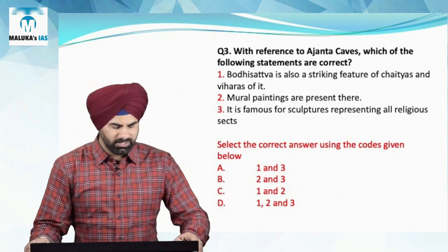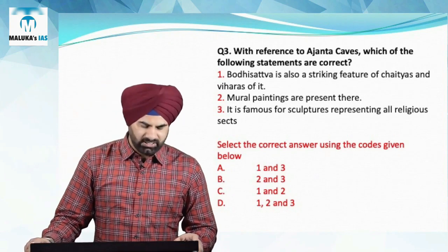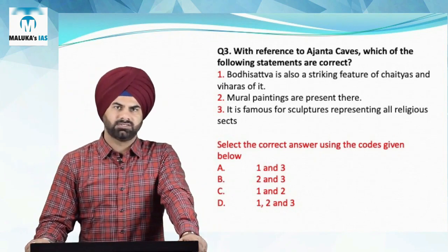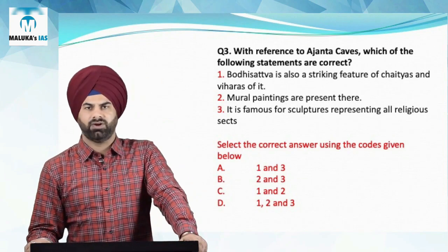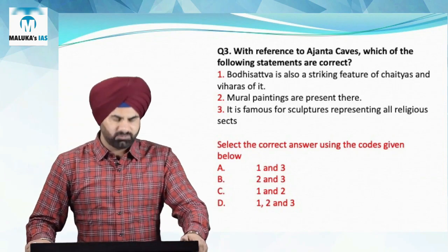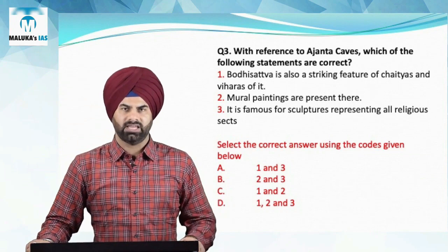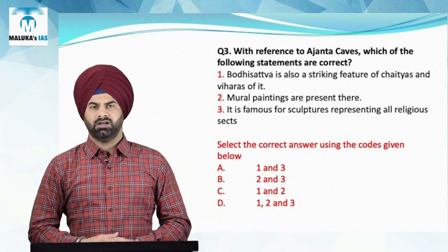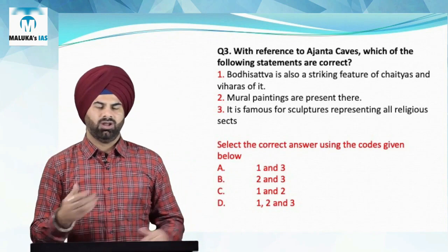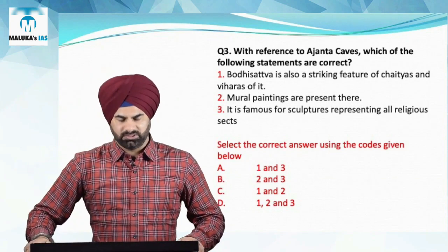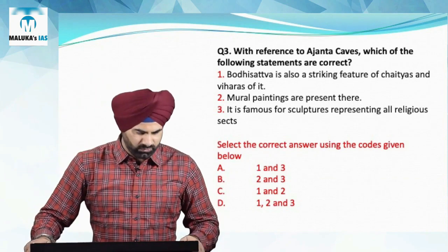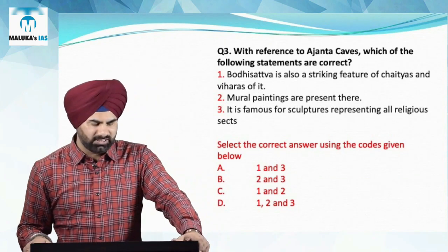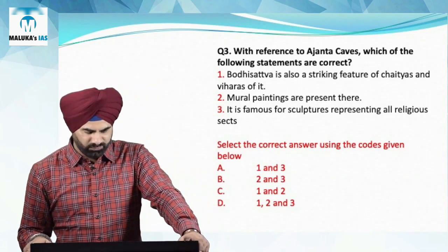The third statement — that Ajanta is famous for sculpture representing all religious sects — is wrong. All religious sects such as Ajivikas, Buddhism, Jainism, and Brahmanism are represented in Ellora caves, not Ajanta. All 30 Ajanta caves are devoted to Buddhism only. Therefore for question number three, C becomes the answer, where the first and second statements are correct and the third is wrong.